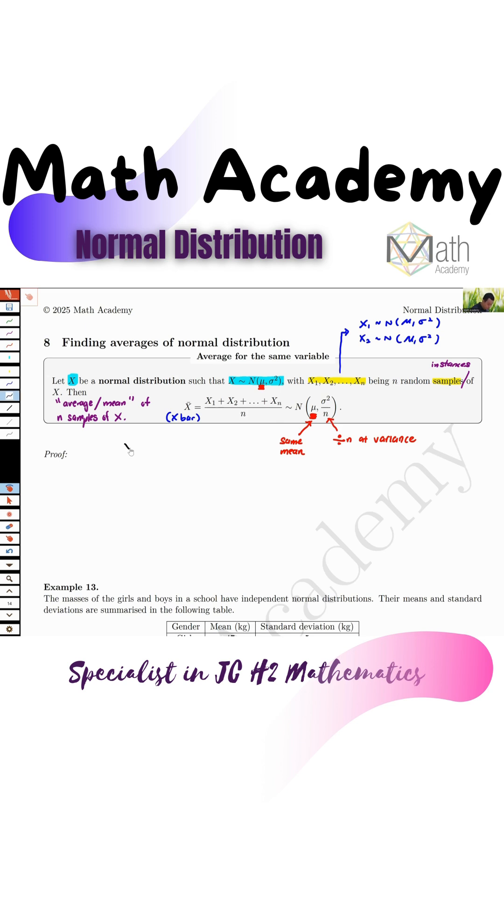But let's try to prove this together. So we're going to start with x distribution. It's mu sigma square.